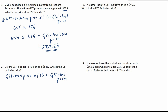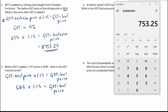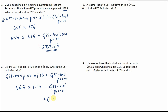The exclusive price before GST is added is $545. Multiplying that by 1.15 will give us the GST inclusive price. The answer is $626.75. That is the GST inclusive price.